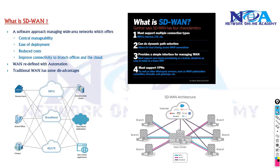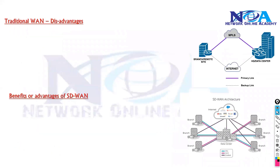We're doing that because traditional WANs have some disadvantages. Let's understand those disadvantages, and then we'll understand what advantages SD-WAN gives us and how it is a better option compared to traditional WAN.